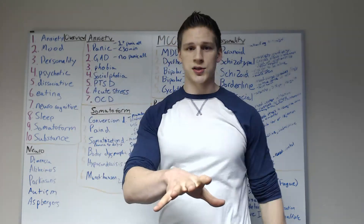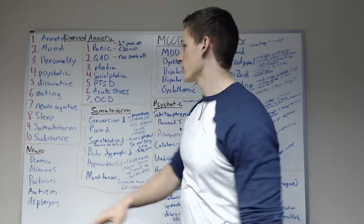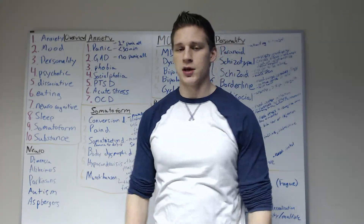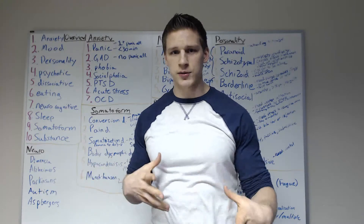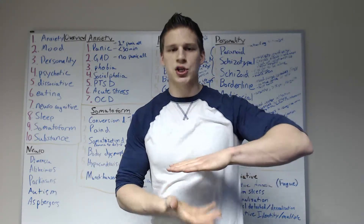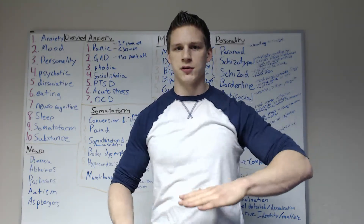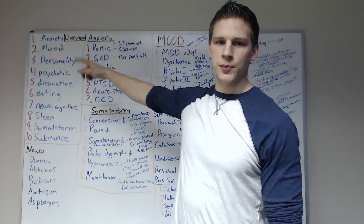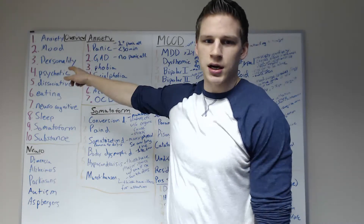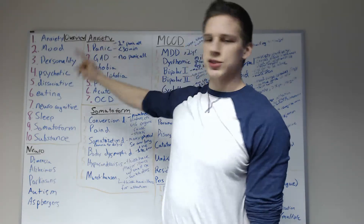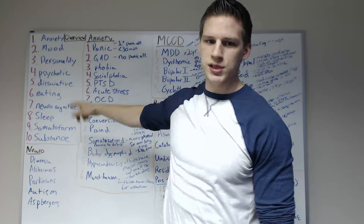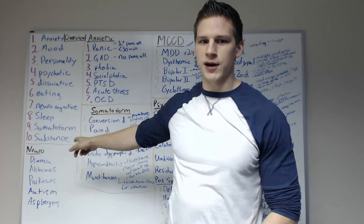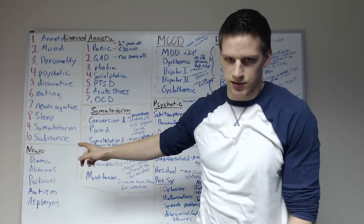So these are psychological disorders that we're going over today, and they're split into about ten different categories. This ten is kind of arbitrary but it does a good job of breaking them into their independent units. So: anxiety disorders, mood disorders, personality disorders, psychotic disorders, dissociative disorders, eating disorders, neuro disorders, sleep disorders, somatoform disorders, and substance disorders.